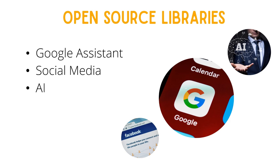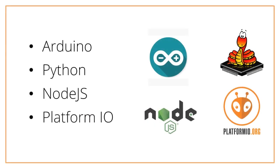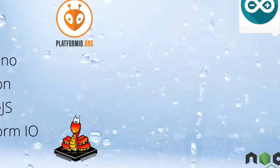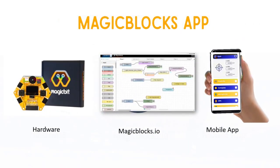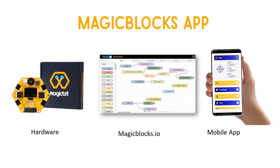So you have plenty of options to explore. If you are really into programming, you can also use Arduino, Python, Node.js, and Platform IO to program the MagicBit platform. All content and projects related to these software can be readily tested with MagicBit. You can even connect your mobile phone sensors to your IoT application or send notifications to your mobile — that's what the MagicBlocks mobile app is made for.